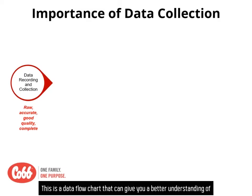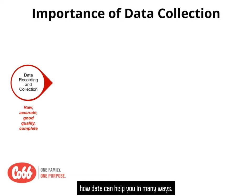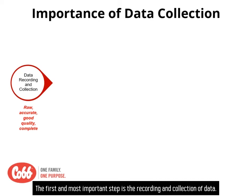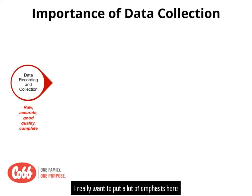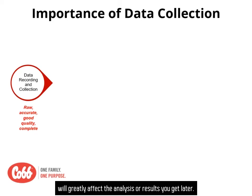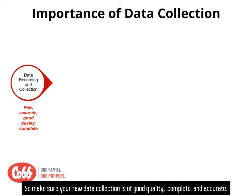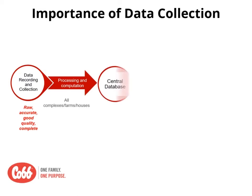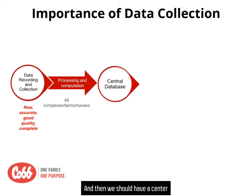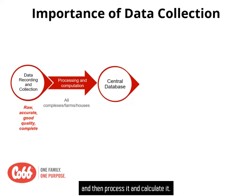This is a data flowchart that can give you a better understanding of how data can help you in many ways. The first and most important step is the recording and collection of data. Whatever you collect at this point will greatly affect the analysis or results you get later. So make sure your raw data collection is of good quality, complete, and accurate. Then we should have a center where you put all the data that you collect, and then process it and calculate it.